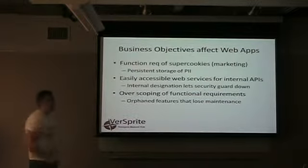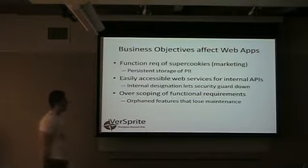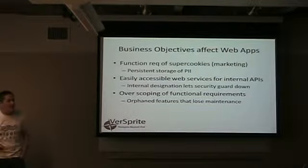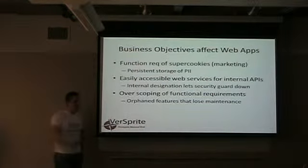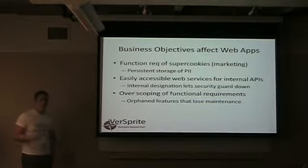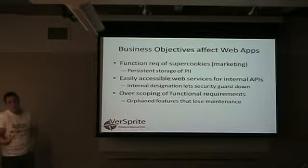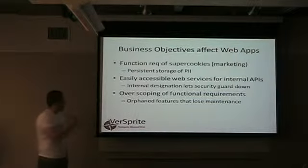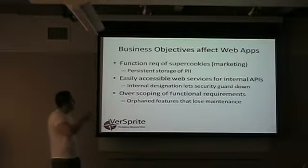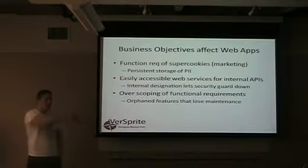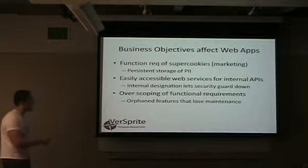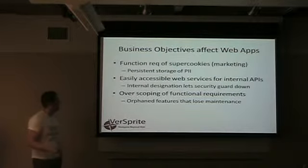For example, here's an example of business objectives: super cookies — very common from a marketing perspective. Marketers want to track geolocation and everything. Persistent cookies are great from a business standpoint but are a little bit illegal according to the FTC — yet a lot of companies are still doing it. As security practitioners, we have to level-set in stage one business objectives.